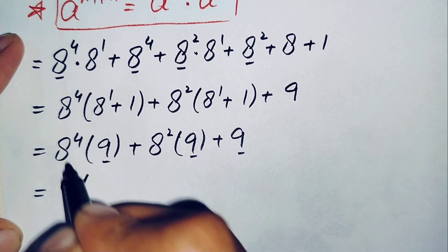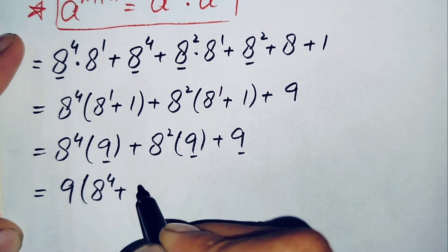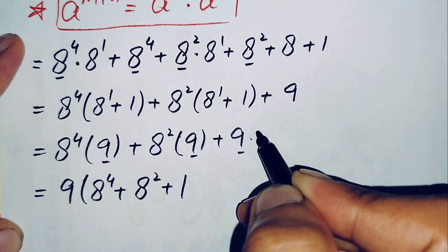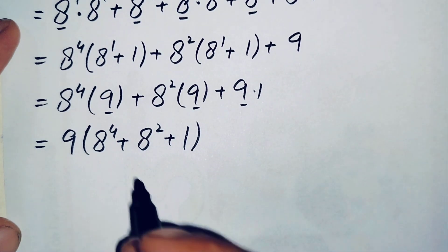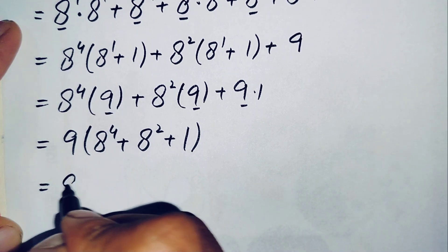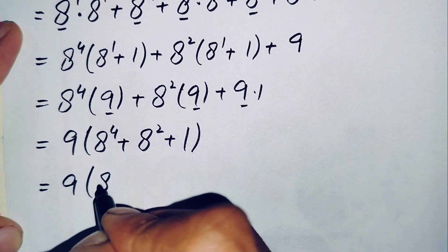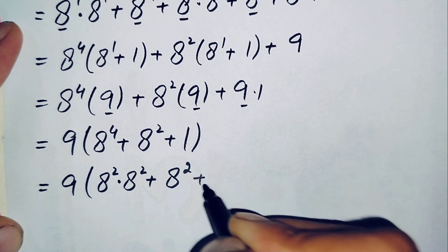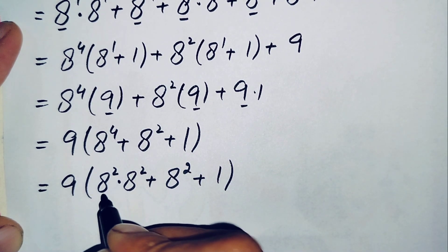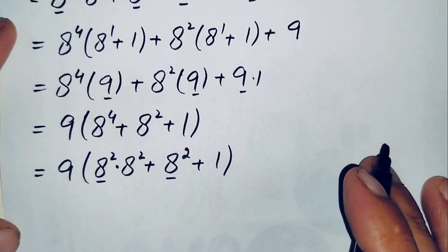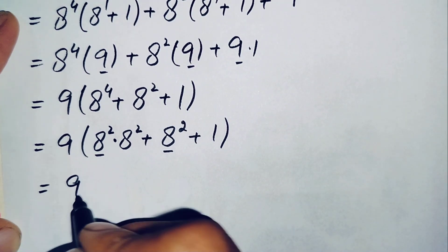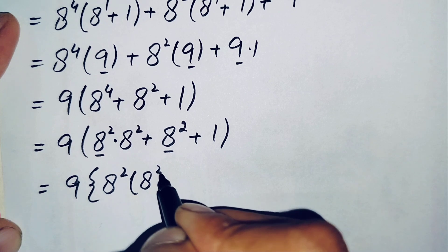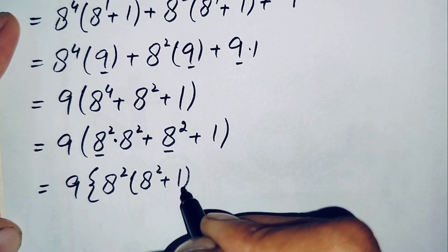Taking 9 common from all terms gives: 9 times (x to the power 4 plus x to the power 2 plus 1). Next, we can write x to the power 4 as x to the power 2 times x to the power 2. Then taking x to the power 2 common from the first two terms inside the parenthesis gives: 9 times (x to the power 2 times (x to the power 2 plus 1) plus 1).